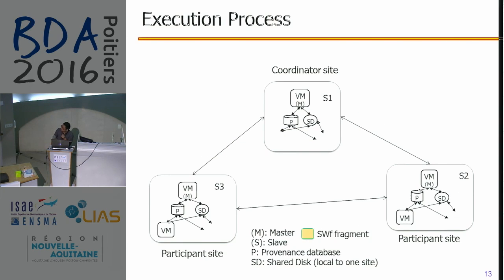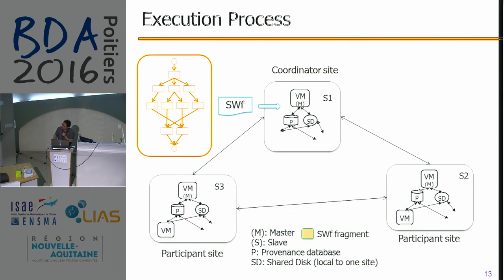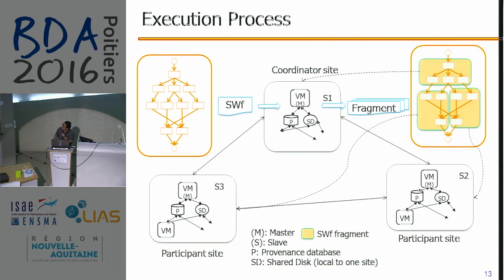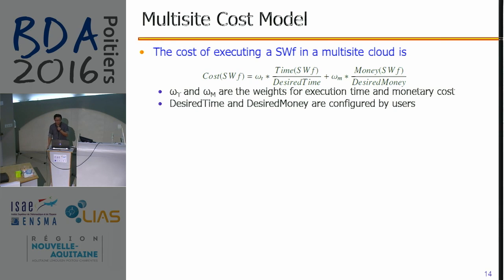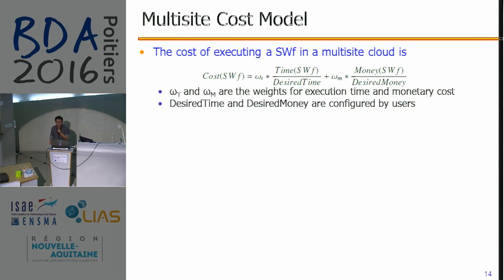Let me present the execution process. First, a scientific workflow is partitioned into different fragments, and then each fragment is scheduled to different cloud sites. Afterward, the virtual machines are provisioned at different cloud sites, and the data is transferred to different cloud sites in order to execute the scientific workflow fragment. When we execute the scientific workflow at different cloud sites, we can use the first formula to estimate the cost of execution. However, this cost model makes it difficult to provision virtual machines and to estimate the global execution time and monetary cost in a multi-site cloud. Thus, we propose our own cost function.